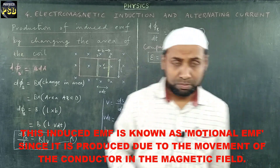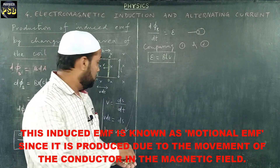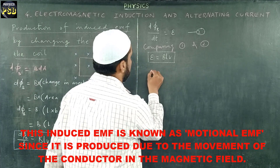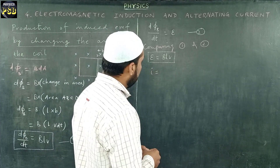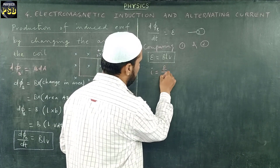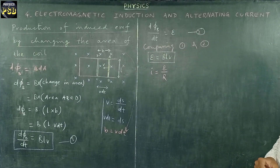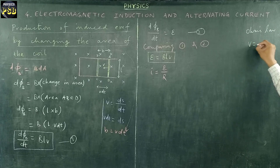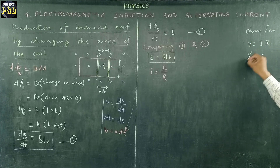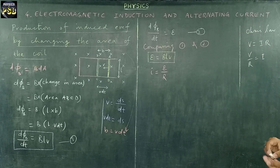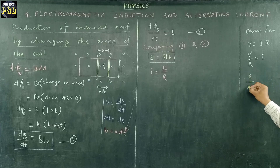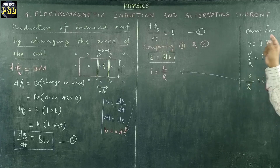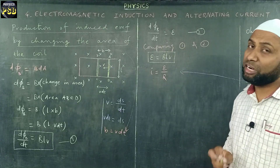This gives us the expression for the induced EMF in this loop. Now, if this loop has a resistance R, then the induced current in this loop is given by I = ε/R, obtained using Ohm's law. Ohm's law states V = IR, so I = V/R. In our case, V is replaced by ε (the EMF) and R remains R, giving us the expression for the induced current.